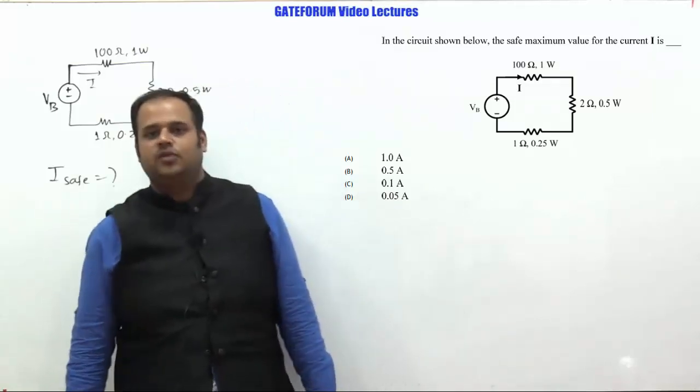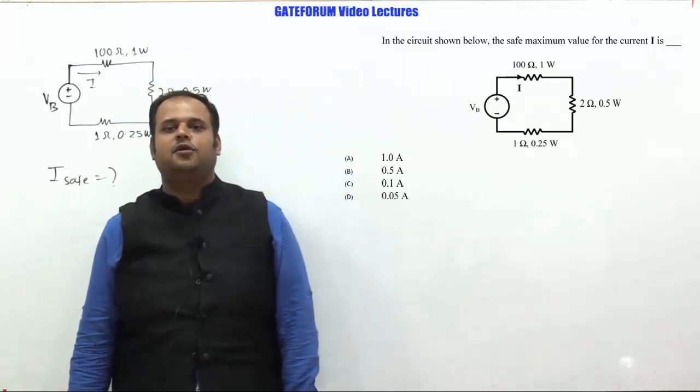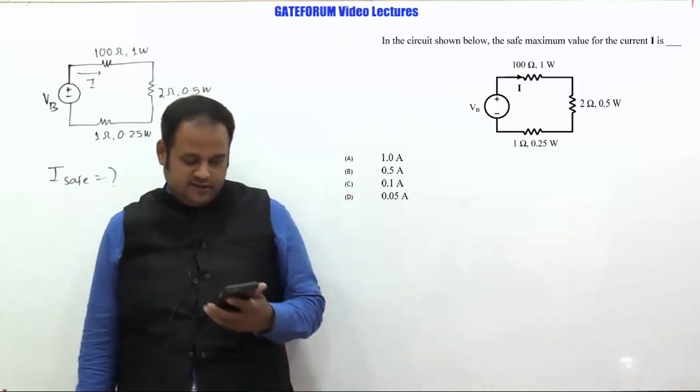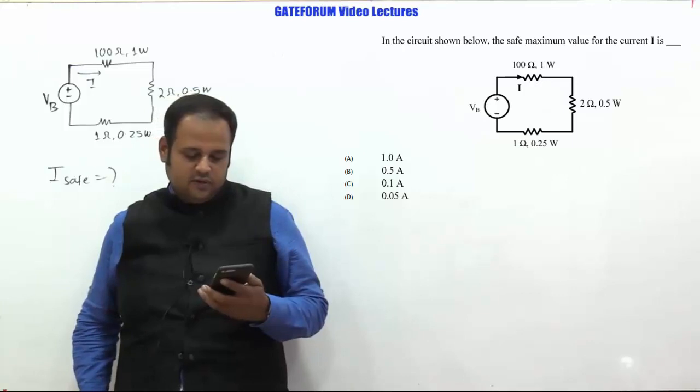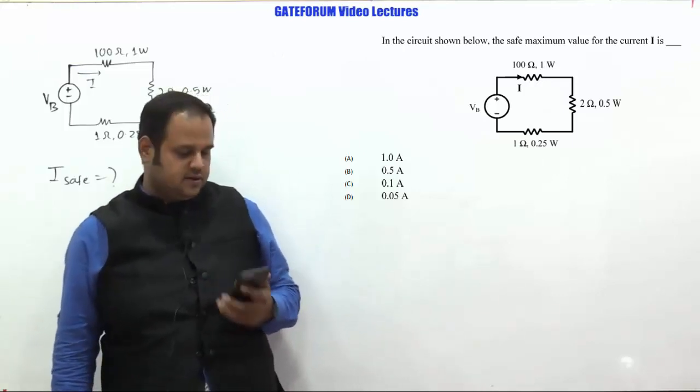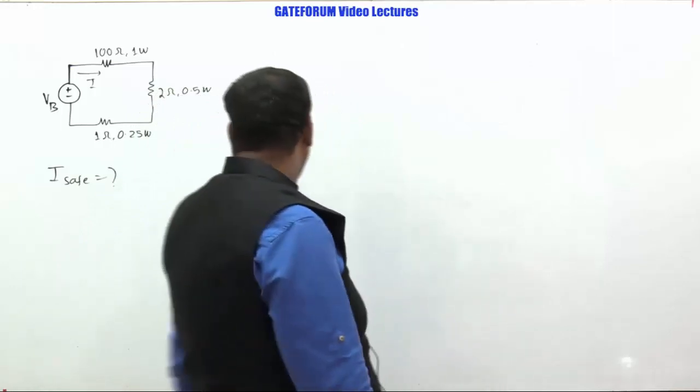This is one more question asked in GATE 2020 of Instrumentation. This is from network theory subjects and from the fundamental chapter. The given question is, in the circuit shown below, the safe maximum value of current I is. So, this is the circuit given.